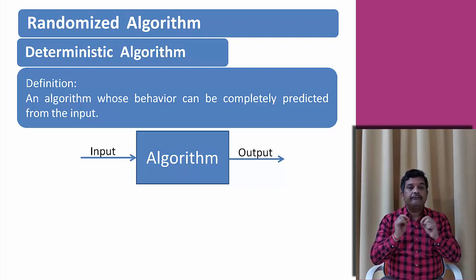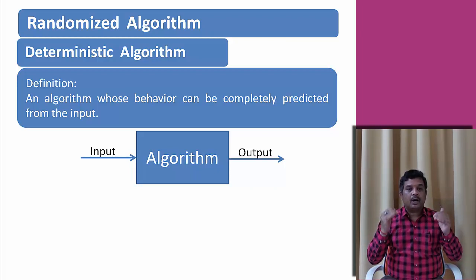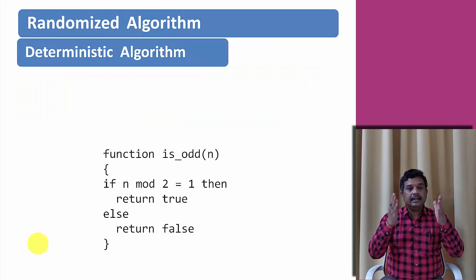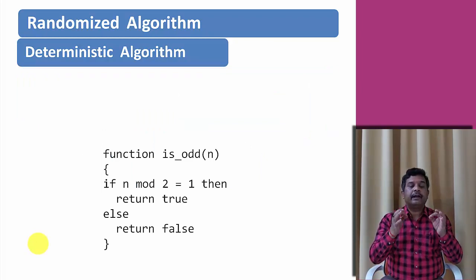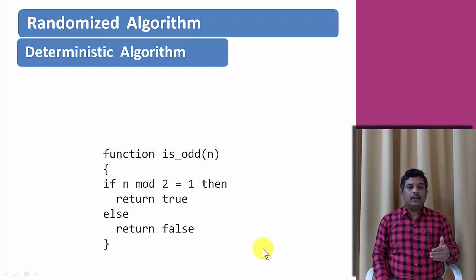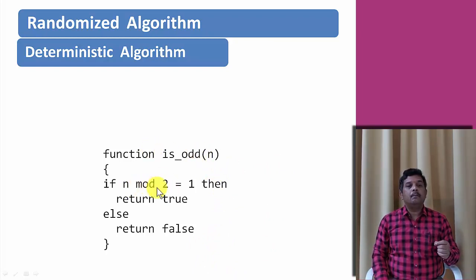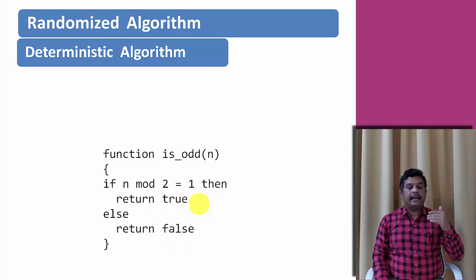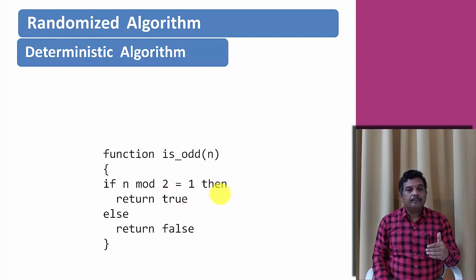The deterministic algorithm computes a mathematical function. A function has a unique value for any input in its domain, and the algorithm is a process that produces a particular value as output. For example, a function finding whether a value is even or odd — we pass a variable and take mod 2. If it returns 1, it is odd; if it returns 0, it is even.